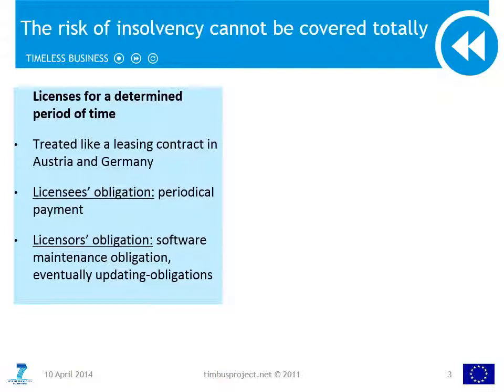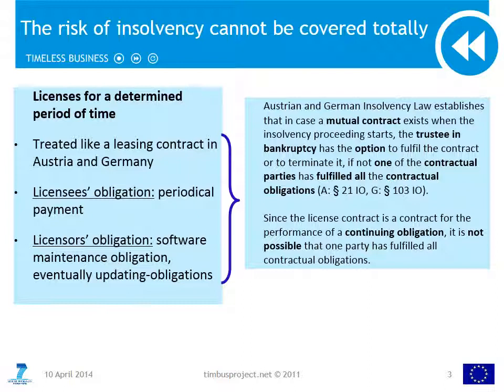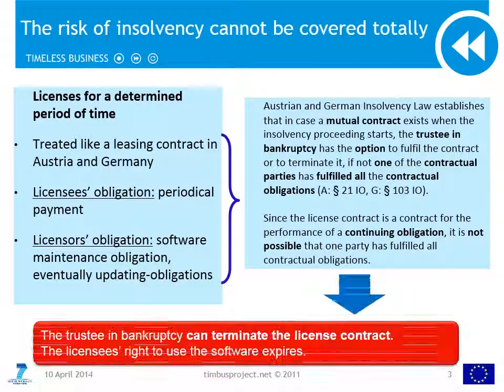In Germany and Austria, licenses for a predetermined period of time are treated like leasing contracts. The licensee has a periodic obligation to pay for the use of the software, and the licensor has the obligation to maintain the software. Austrian and German insolvency law establishes that where a mutual contract exists when the insolvency proceedings start, the trustee in bankruptcy has the option to fulfil the contract or to terminate it if one of the contractual parties has not fulfilled all their contractual obligations. This contains the accessory obligations of the contract. If one contracting party has fulfilled all obligations, the trustee in bankruptcy has no option right. Since the license contract is a contract for the performance of a continuing obligation, it is not possible that one party has fulfilled all contractual obligations if the continuation ceases. Therefore, the trustee in bankruptcy can terminate the license contract, with the consequence that the licensee's right to use the software expires.